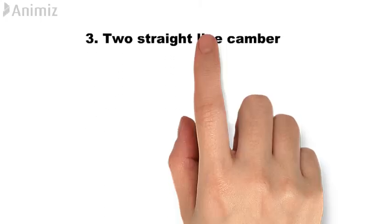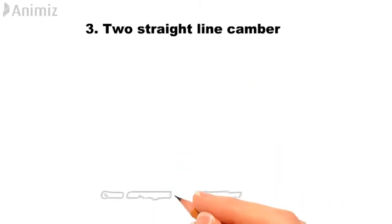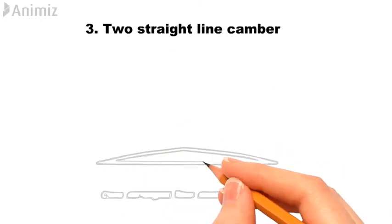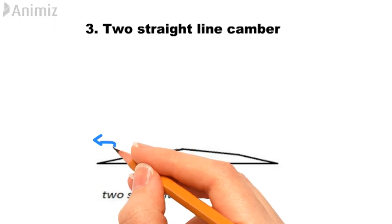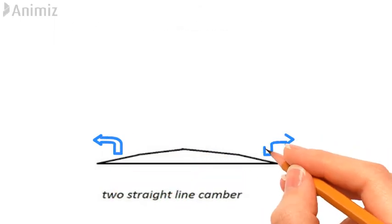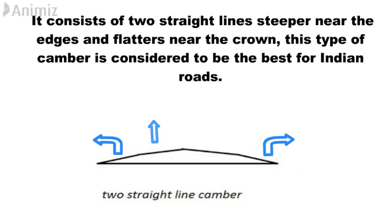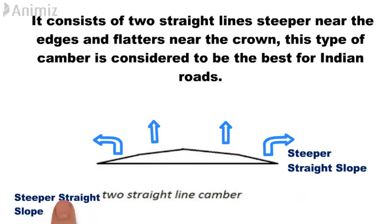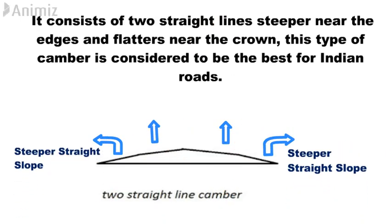Three: Two straight line camber. It consists of two straight lines, steeper near the edges and flatter near the crown. This type of camber is considered to be the best for Indian roads.